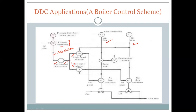The first unit is the high signal selector and the second is the low signal selector. Each has two inputs and one output. This is one input, this is one input, and this is one output. The function of the high signal selector and low signal selector will now be explained.